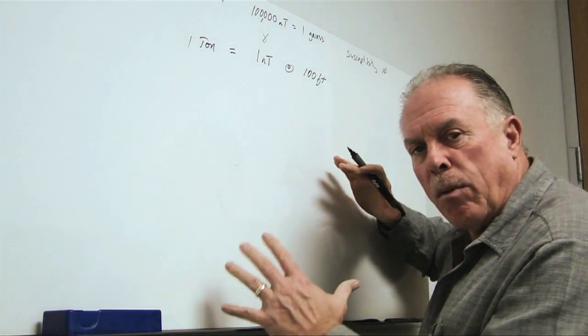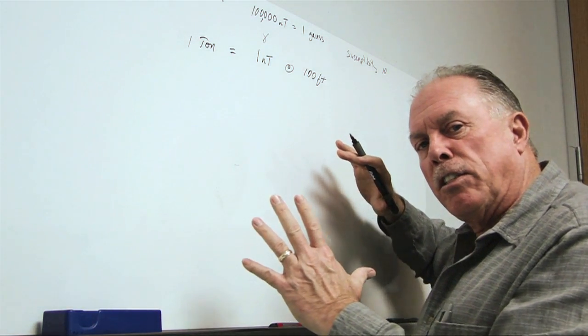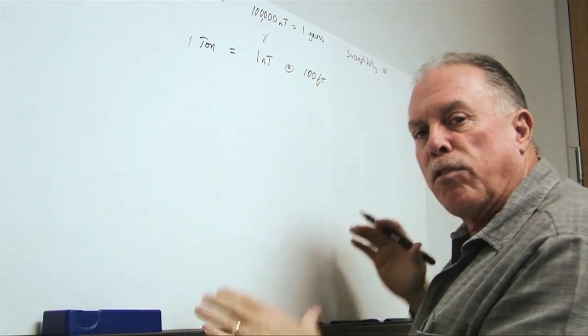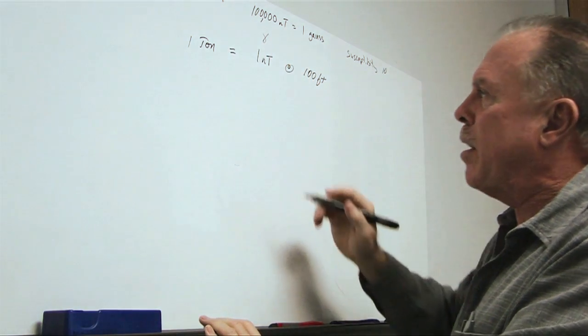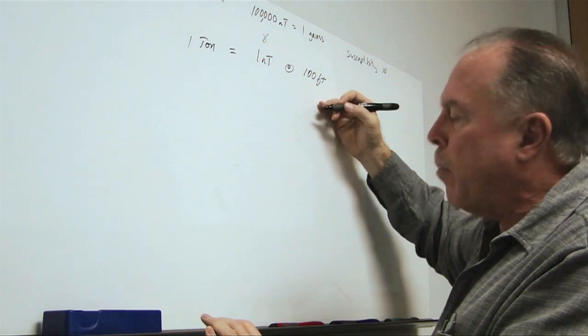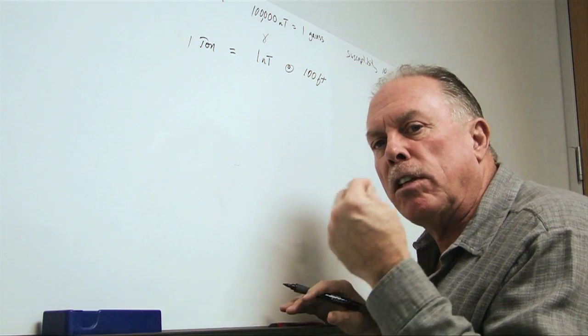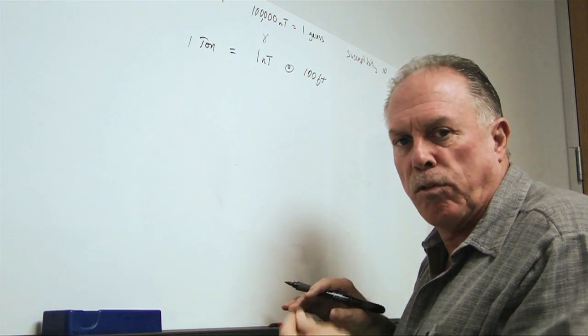Now, the field that we showed in the previous section actually falls off as the inverse cube with distance. What does that mean? Well, that means when we double the distance, we only have one-eighth of the field intensity or the distortion to the field.